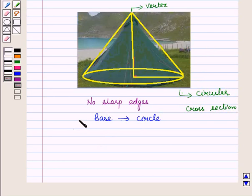So it will have circular cross section. So it is a cone.